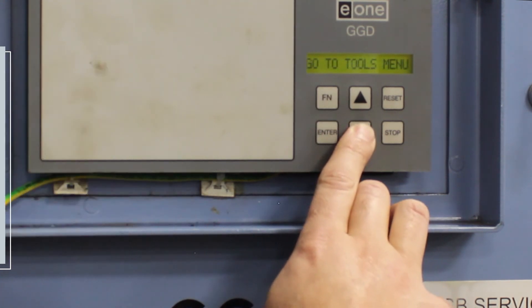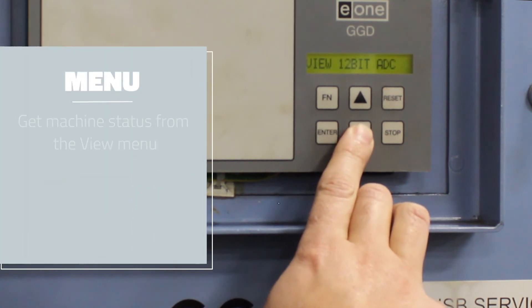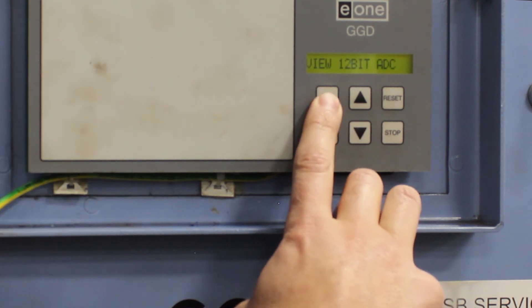Function brings you back to the View menu. Here we can view what's going on with the unit in the 12-bit analog digital converter, the register, the three-phase, the view of the columns, the valves, the status, usage, counters, and back to the converter.